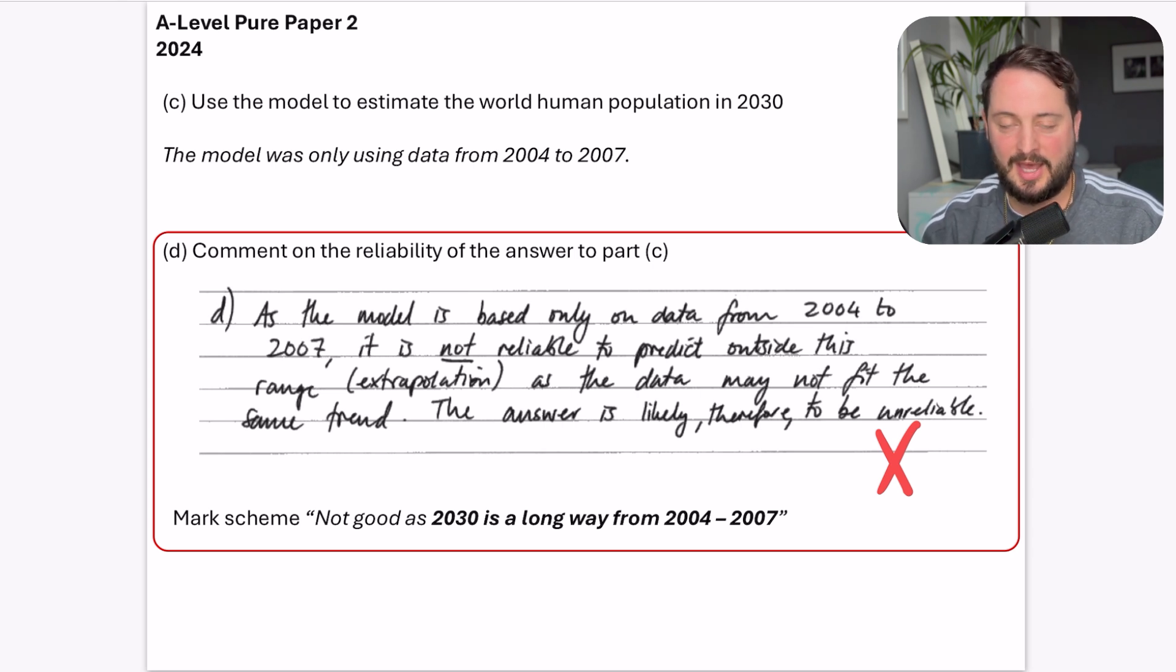So it was from this pure paper 2, and the first part of the question was about exponential modelling for the world human population. They gave us data from 2004 to 2007, and we needed to make a prediction about 2030 for part C. I lost the mark in part D, but we had to say if that answer was reliable.